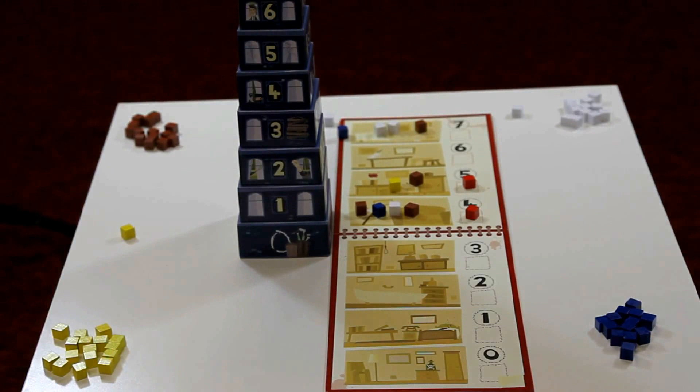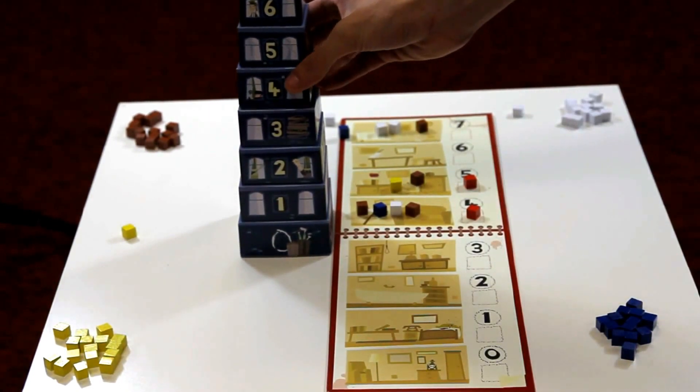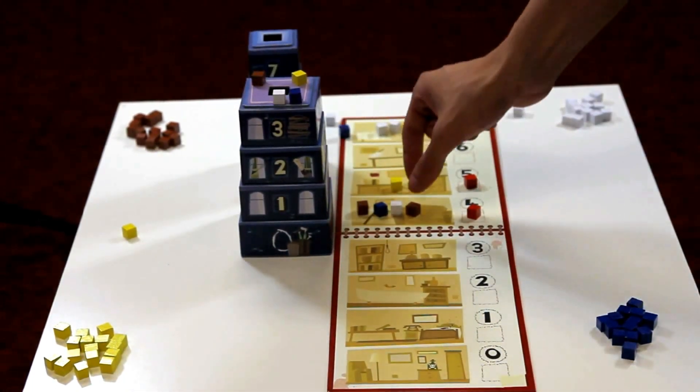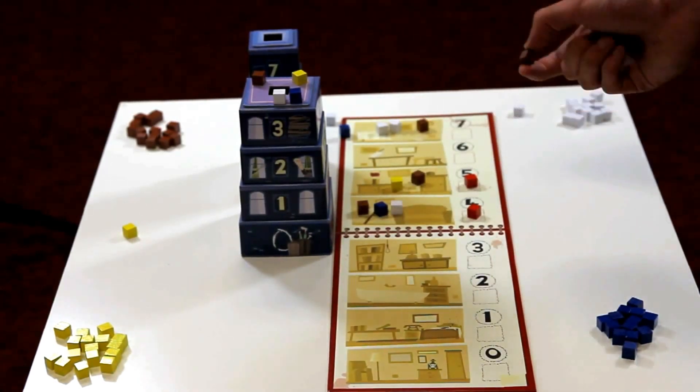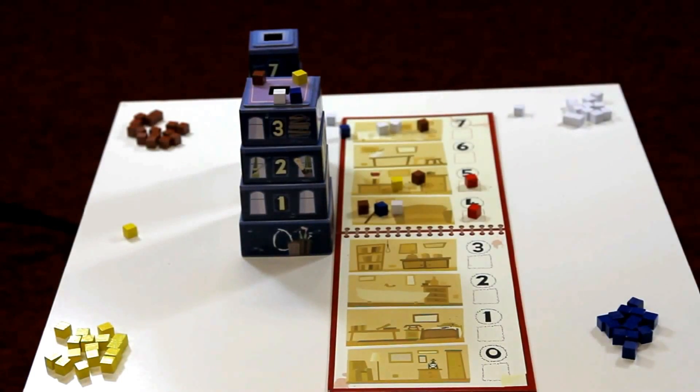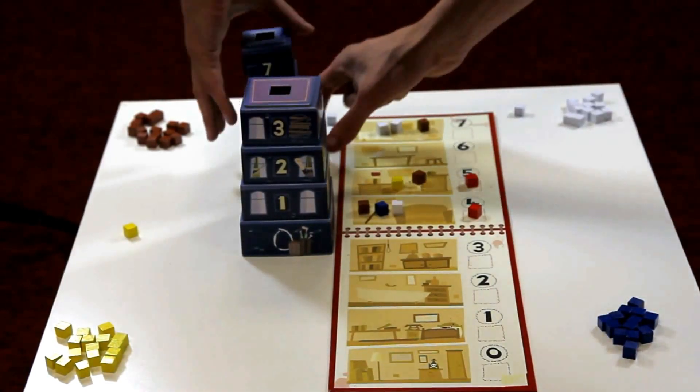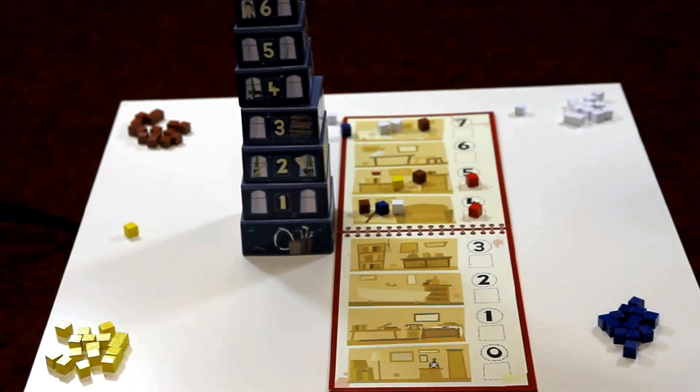It's now the brown player's turn. He will try to remove suspicion from himself by covering his tracks on the fourth floor. Revealing the fourth floor shows one brown cube. That allows the brown player to remove one clue from the investigation sheet. The revealed cubes, once again, are re-seeded into the tower.